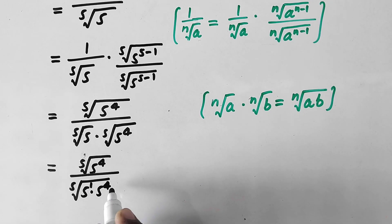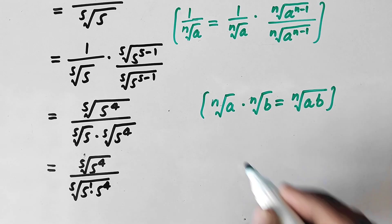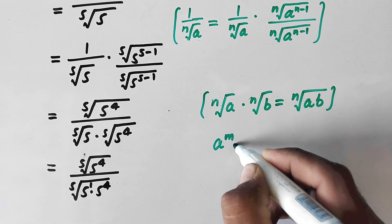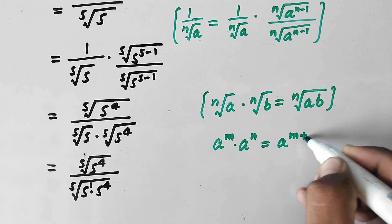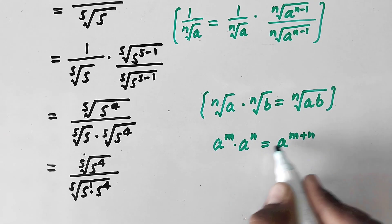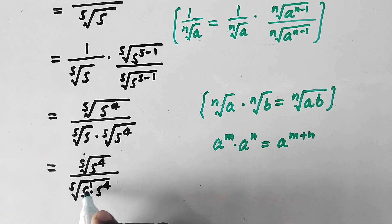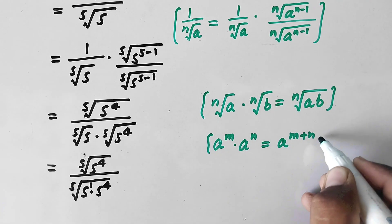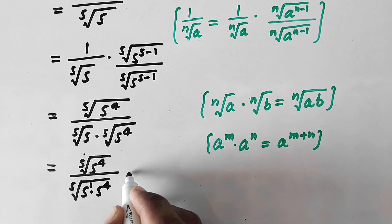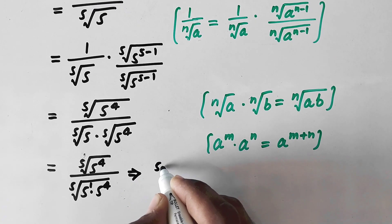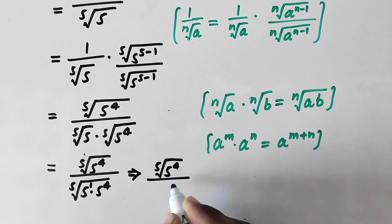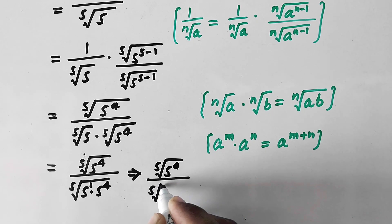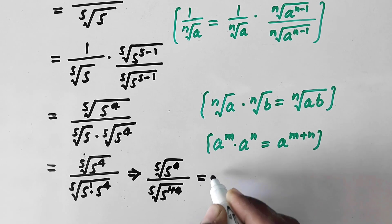We apply the exponent product rule: a^m times a^n equals a^(m+n). Applying this to 5^1 times 5^4 in the denominator gives 5^(1+4), so the expression becomes the fifth root of 5^4 divided by the fifth root of 5^5.